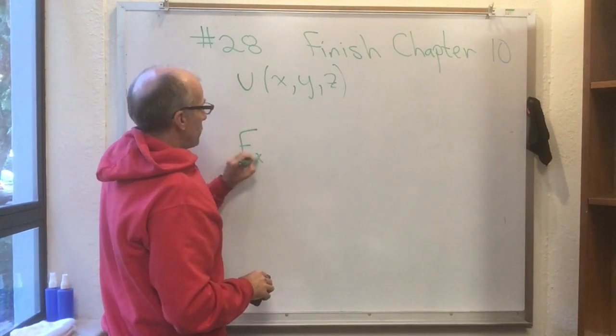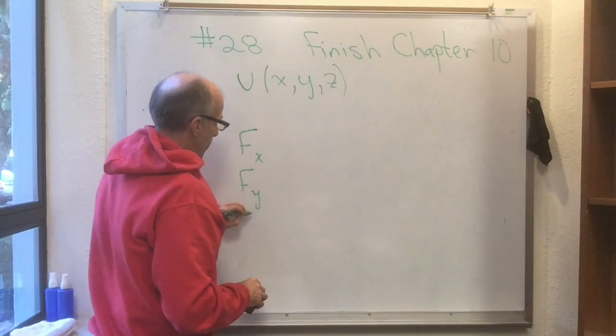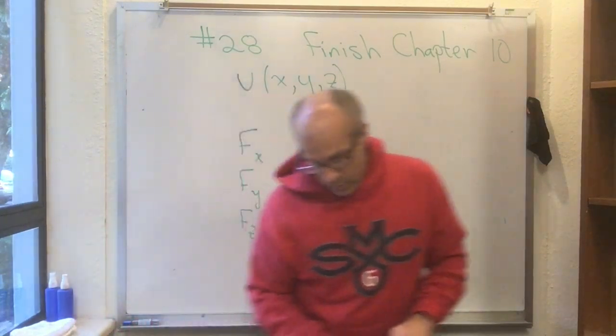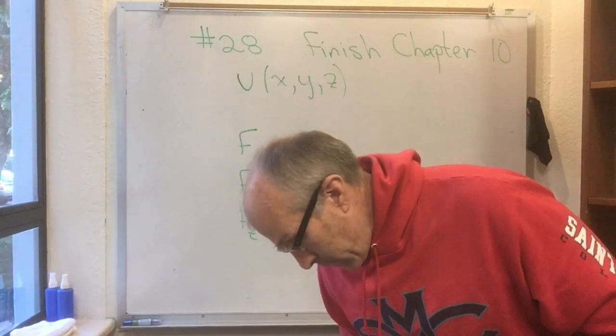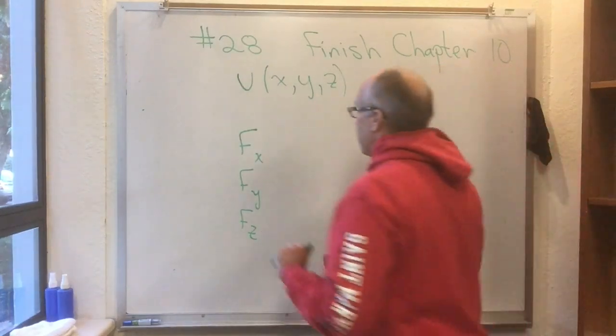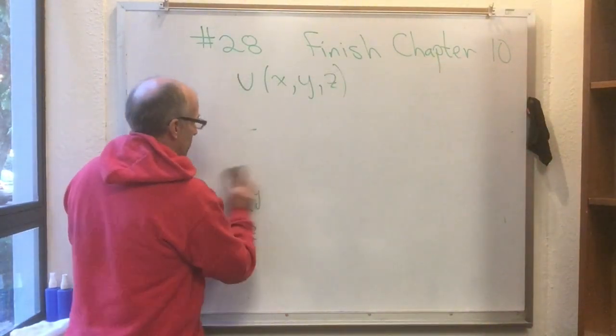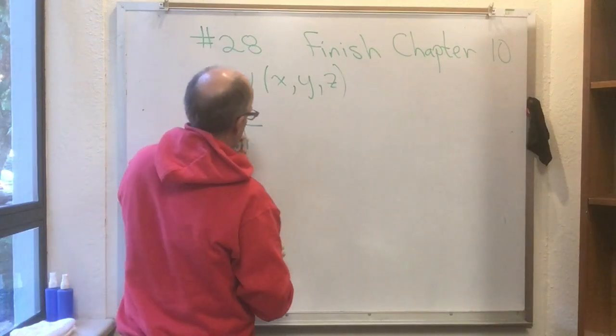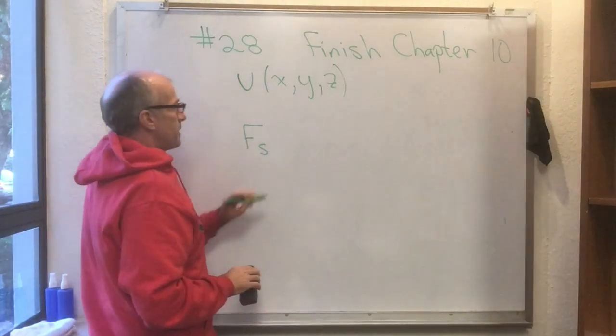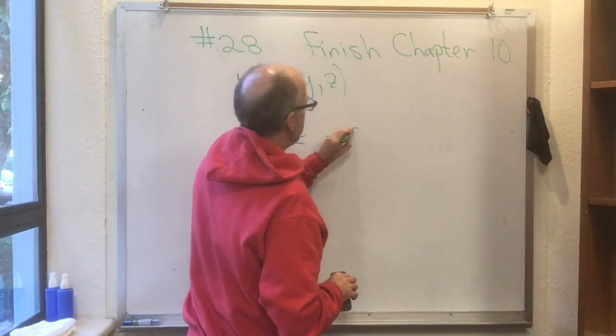So I've shown you how to get Fx, Fy, and Fz. If you go to Knight equation 10.26, he actually shows you how to get something that he calls Fs. And he says that's equal to minus dU/ds.